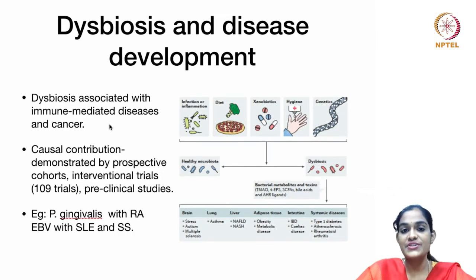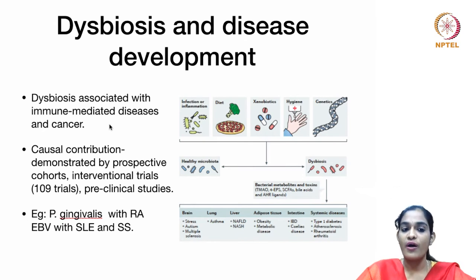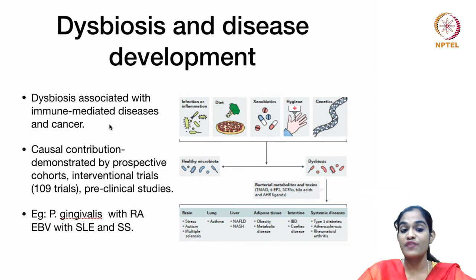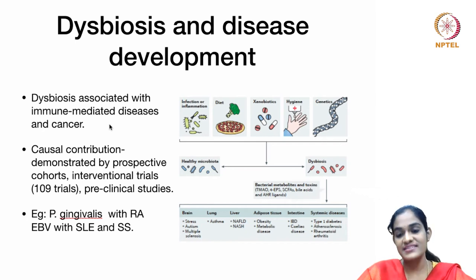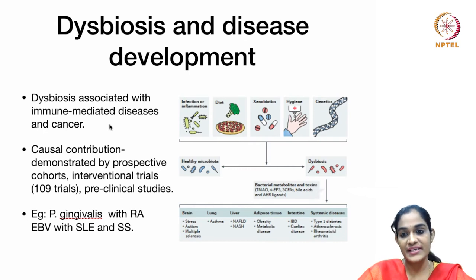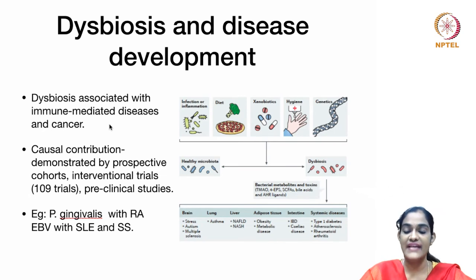The interaction between toll-like receptor 2 and complement receptor C5AR can lead to altered phagocytic and microbial killing. Aberrant interactions of microorganisms with the host immune system in a genetically predisposed individual can lead to a plethora of immune-mediated diseases and cancer. The causal contribution has been demonstrated by prospective cohorts, interventional trials — with almost 109 trials registered — and pre-clinical studies in animal and human models. For example, P. gingivalis has been causally associated with rheumatoid arthritis, and Epstein-Barr virus with systemic lupus erythematosus and systemic sclerosis.